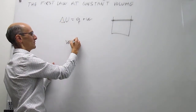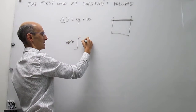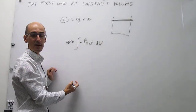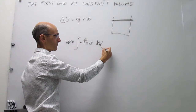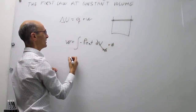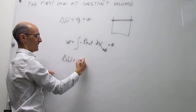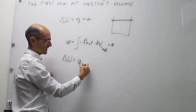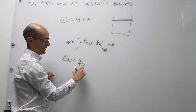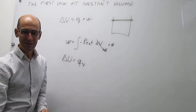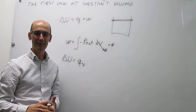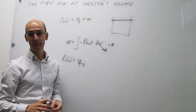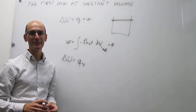Remember that the definition of expansion work is just the integral of minus external pressure times the differential of volume. But in a process at constant volume, the differential of volume is zero, which means that your work is zero. So your first law really turns into just the heat term. Because we're working at constant volume, we specify that this heat is the heat at constant volume with a subscript V. That is your definition of the change in internal energy at constant volume — it's simply just the heat evolved in that process.